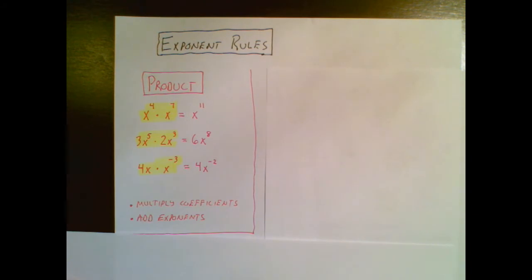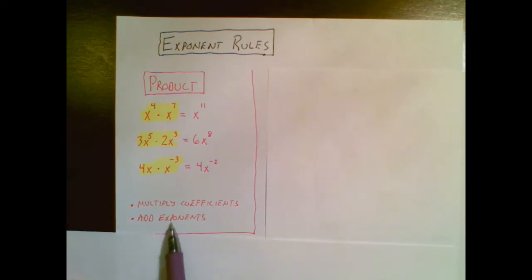Product. When we're multiplying you simply follow these two bullet points: multiply the coefficients and add the exponents. So you can see these examples.